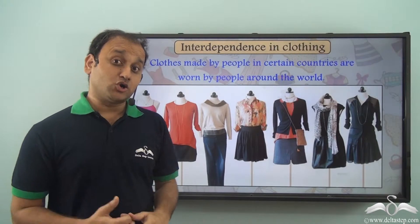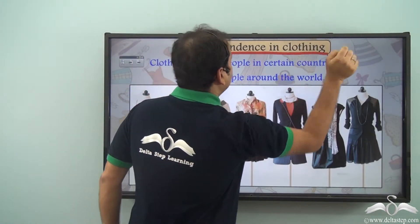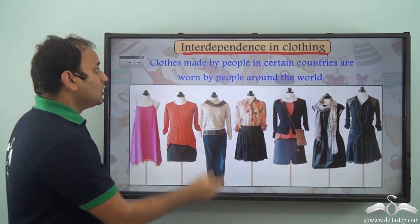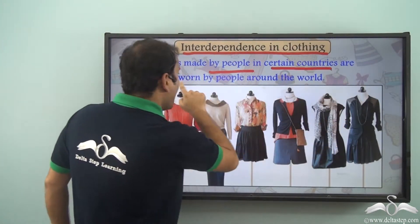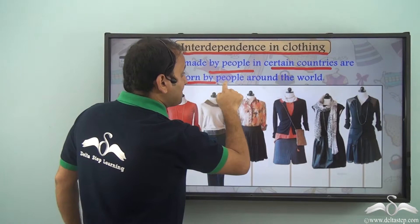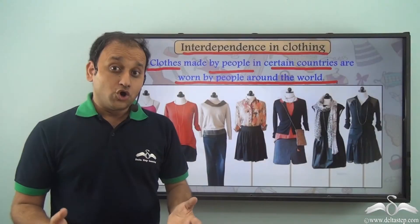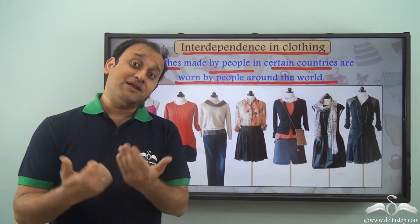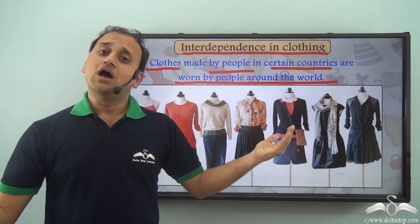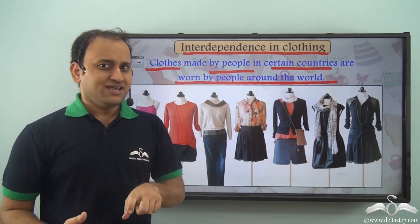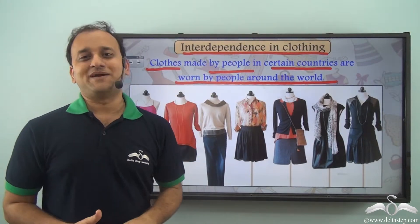What about clothing? There is interdependence in clothing too. Clothes made by people in certain countries are worn by people around the world. So clothes made by people of one country can be worn by people around the world — even in clothing there is interdependence.